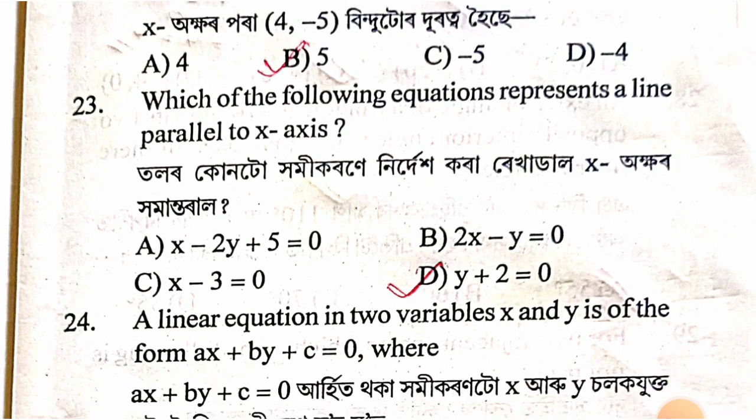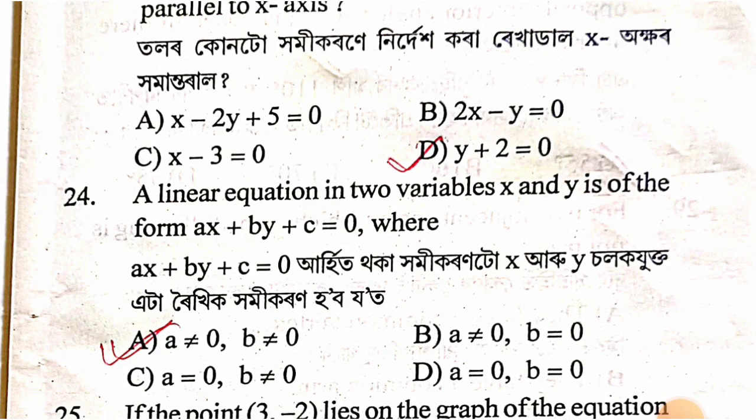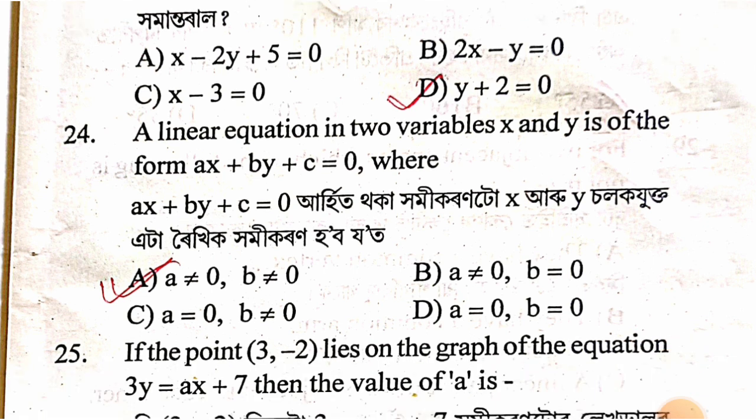For the equation x + y + z = 0, it passes through the origin. The answer is option A for x and option B for y.